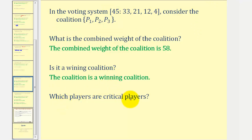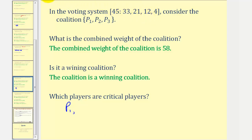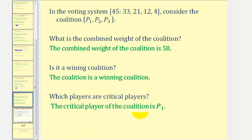Now, which players are critical? If player one leaves, we're left with player two and player three, which have a combined weight of twenty-one plus twelve, equaling thirty-three, which does not meet quota. Therefore player one is critical. If player two leaves, player one and player three have a combined weight of forty-five, which is quota, so player two is not critical. If player three leaves, player one and player two have a combined weight of fifty-four, so player three is not critical. The only critical player is player one.